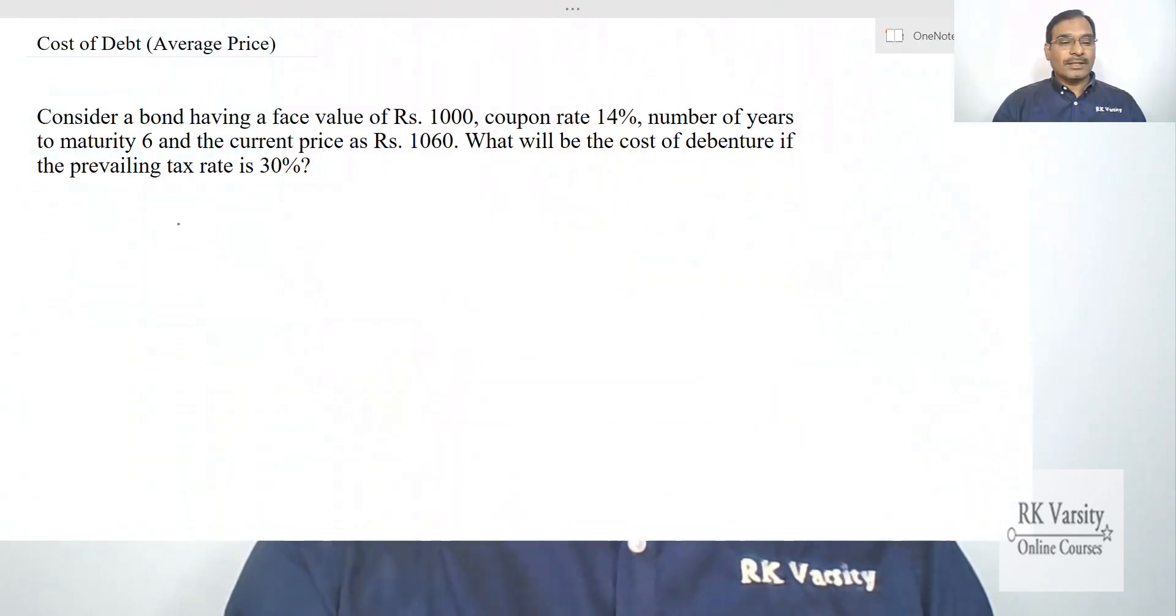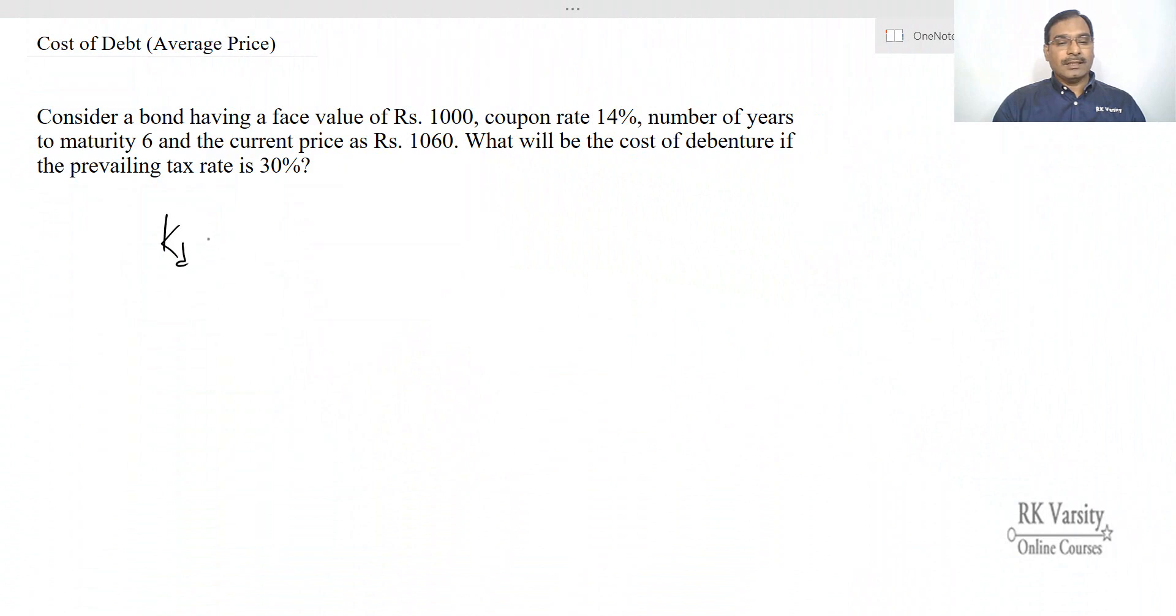The formula to calculate cost of debt equals: coupon amount times (1 minus tax rate) plus (face value of the bond minus present value of the bond) upon n, divided by (face value plus present value of the bond) upon 2.